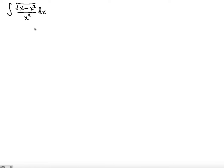We want to find the antiderivative of square root of x minus x squared over x to the fourth. The first thing you should notice is that if you try to put this under the square root and simplify it, you will not go anywhere because you will still have a way higher power in x in the bottom than the top. So there should be another way.